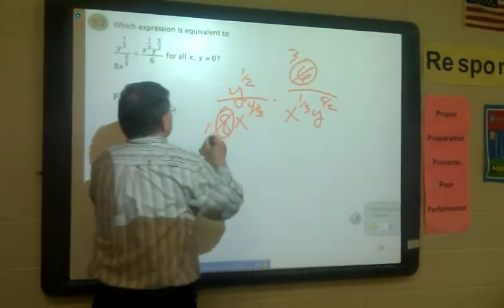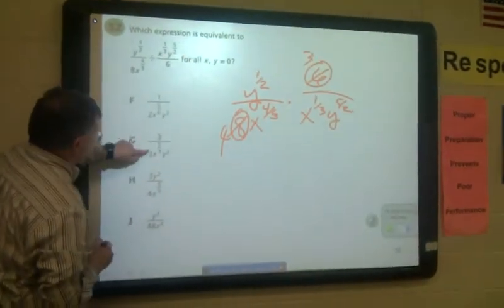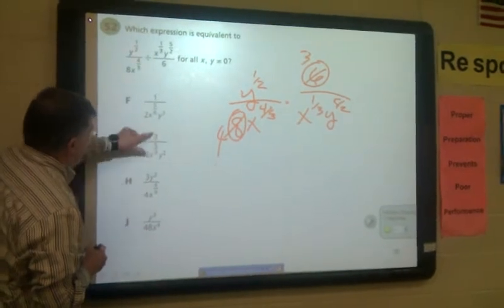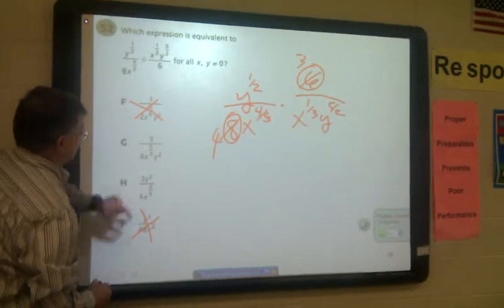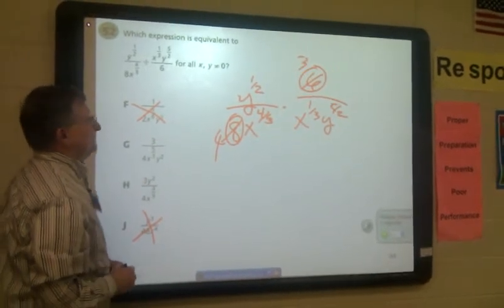Three-fourths, right? Two goes into this three, two goes into this four. So I look down through here, and I got two of them with three-fourths. I can eliminate that one, I can eliminate that one. It's one of these.